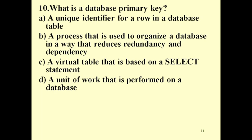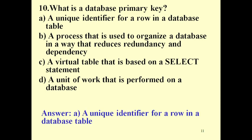Question 10: What is a database primary key? A. A unique identifier for a row in a database table. B. A process that is used to organize a database in a way that reduces redundancy and dependency. C. A virtual table that is based on a SELECT statement. D. A unit of work that is performed on a database. Answer: A. A unique identifier for a row in a database table.